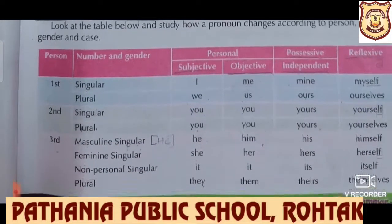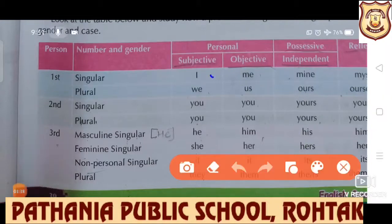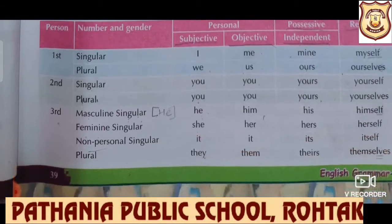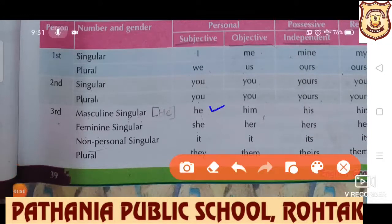Children, we all know that there are three persons. First person singular: I; plural: we. Second person singular and plural: you. Third person — if masculine gender, masculine singular: he; feminine: she; non-personal: it; plural: they.